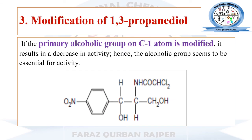Next is the modification of the 1,3-propanediol region. This side chain is known as 1,3-propanediol because it has hydroxyl or alcoholic functional groups at the first and third carbon atoms. These hydroxyl functional groups in the side chain of chloramphenicol are essential for its antibacterial activity. If we modify the alcoholic or hydroxy functional group at the first carbon, it will result in reduced antibacterial activity. Therefore, these functional groups must be left unsubstituted; otherwise, antibacterial activity will be decreased.